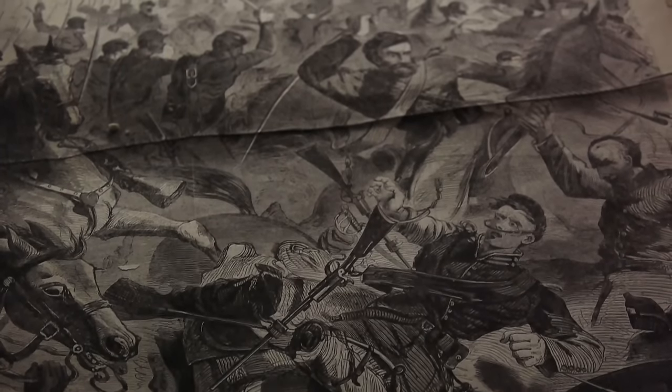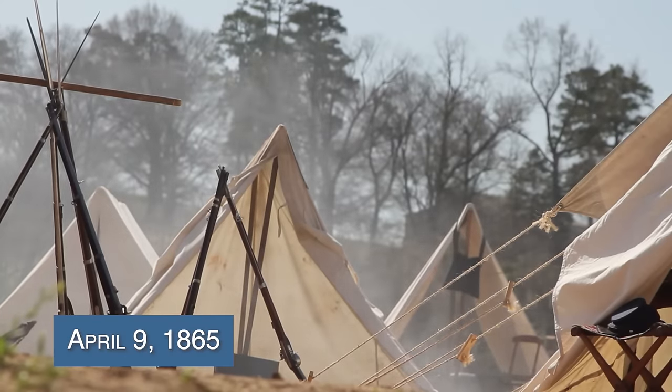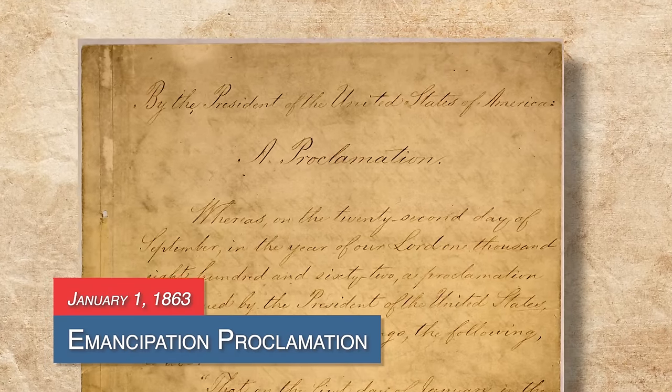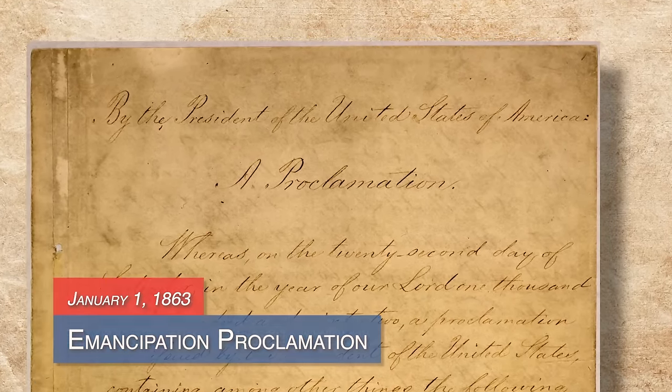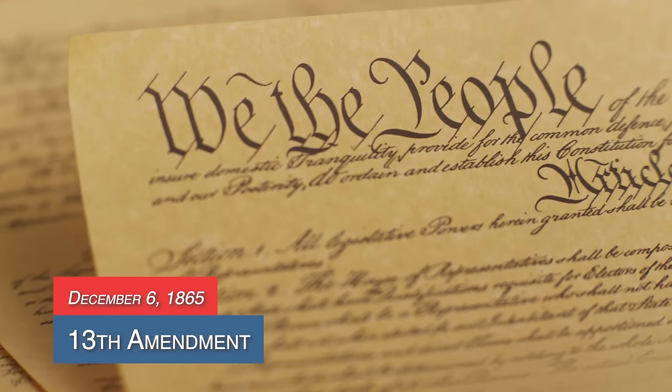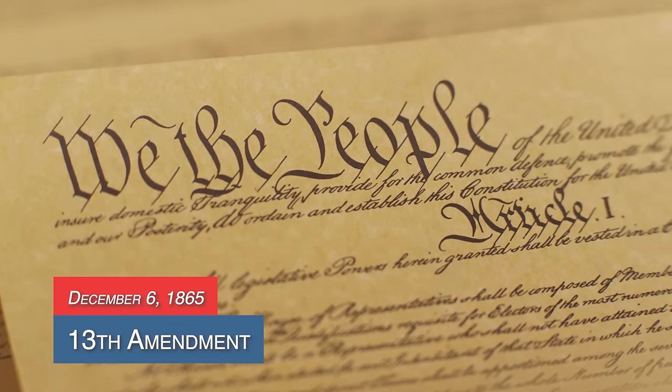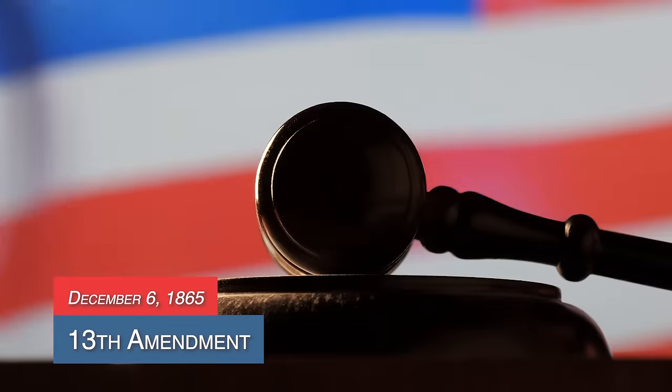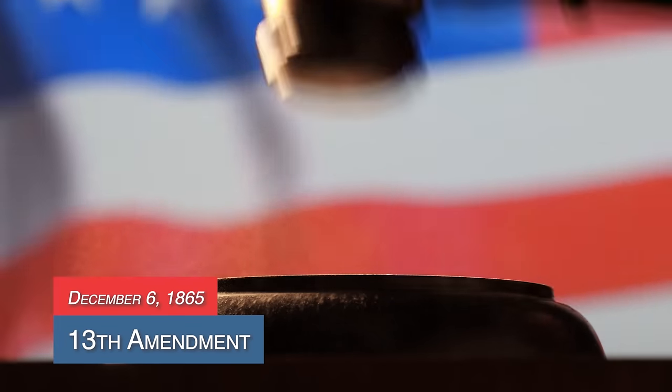The Civil War lasted for four years. It ended April 9, 1865. Lincoln hoped the country would heal, rebuild, and forgive each other. The Emancipation Proclamation eventually did free millions of slaves, though it was not a law and did not make slavery illegal. However, it led to the passing of the 13th Amendment to the U.S. Constitution on December 6, 1865. That amendment finally made slavery illegal in the United States.